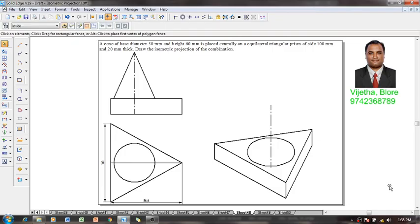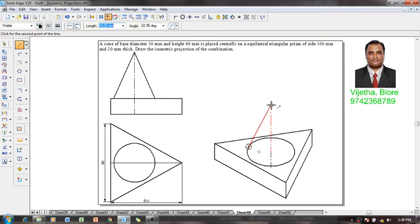Then using a line command with the continuous line and 0.5, we have to draw a line tangential to the arc to the apex point, and then apex to the point on element and tangent. Now using the trim command, we can eliminate the unwanted lines which are invisible.